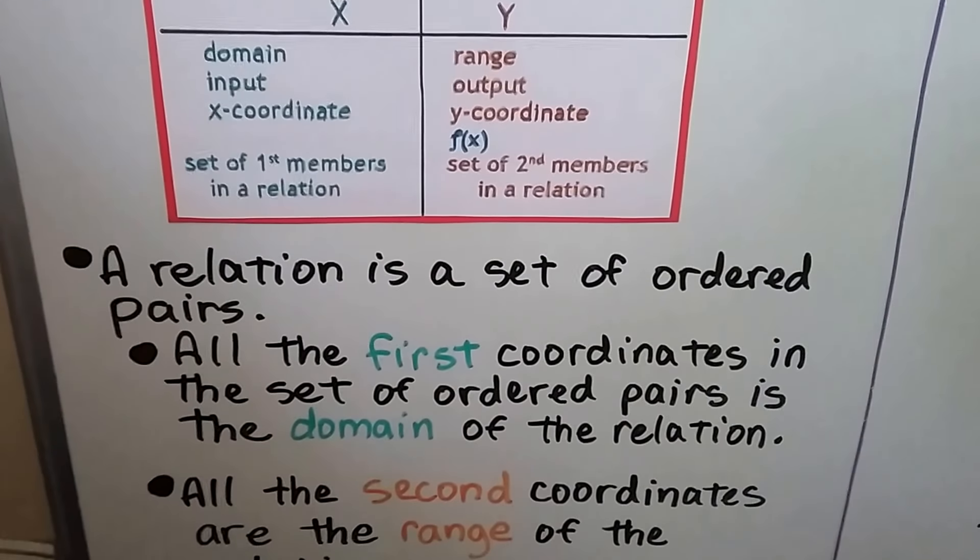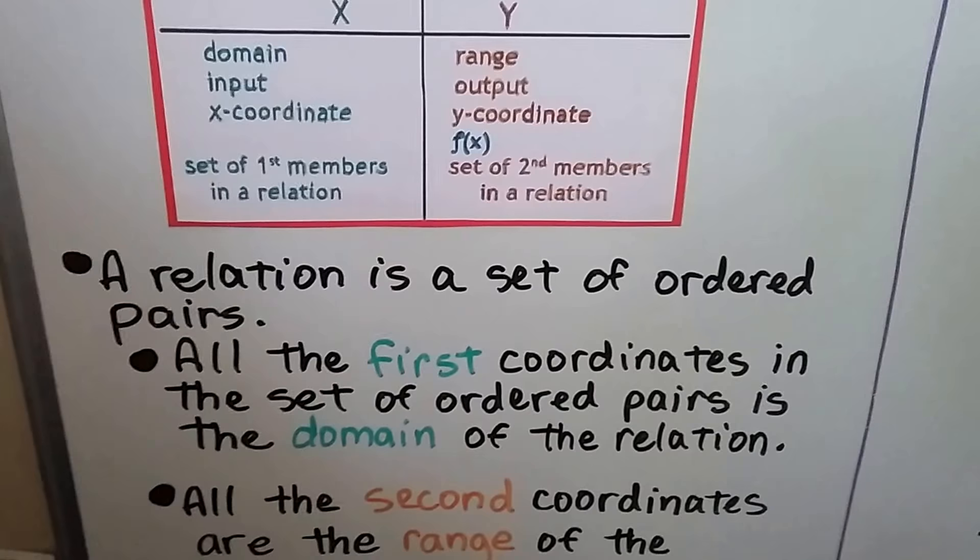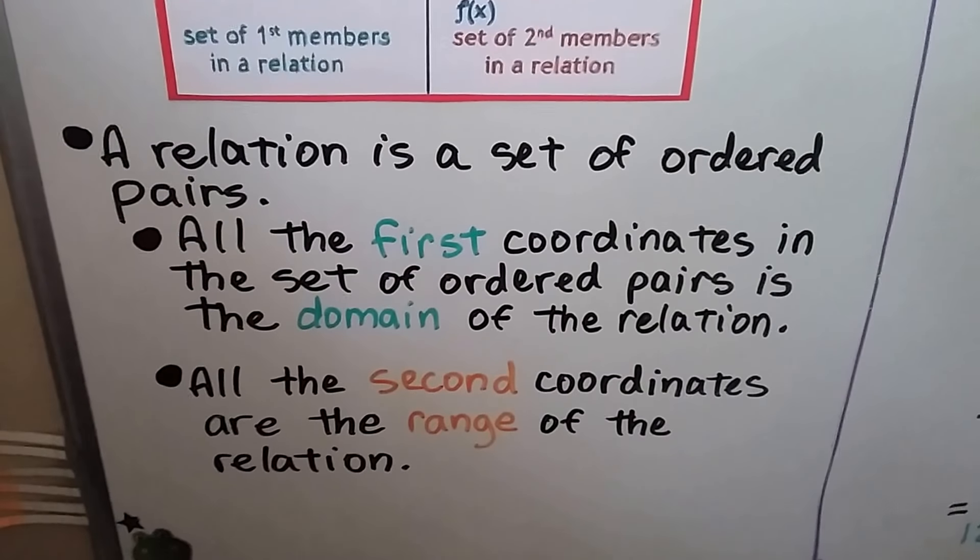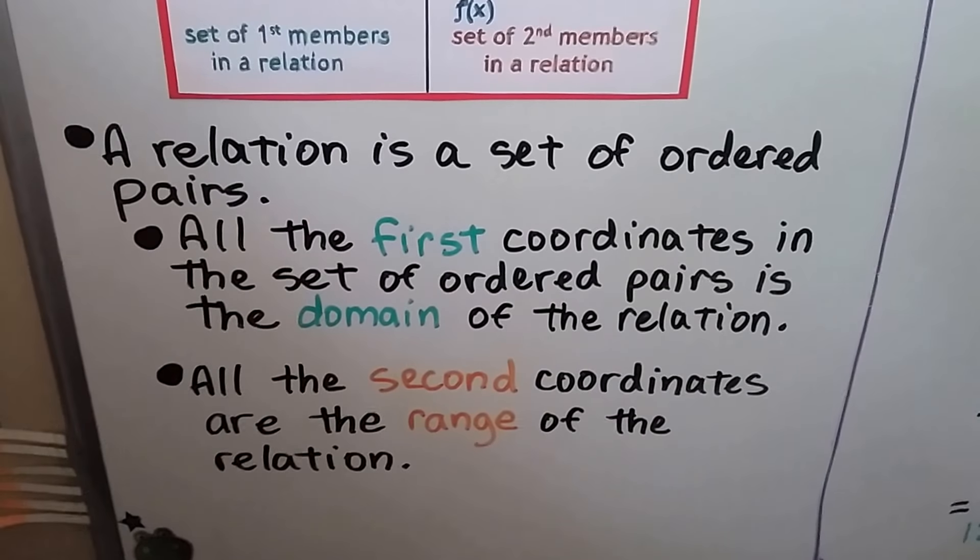A relation is a set of ordered pairs. All the first coordinates in the set of the ordered pairs is the domain of the relation. All the second coordinates are the range of the relation.